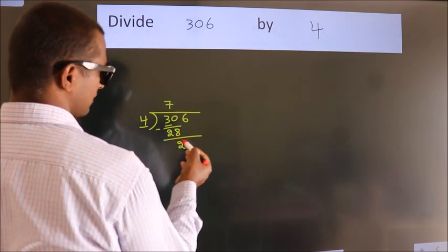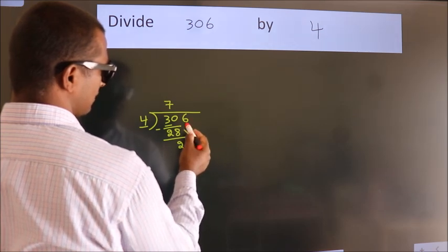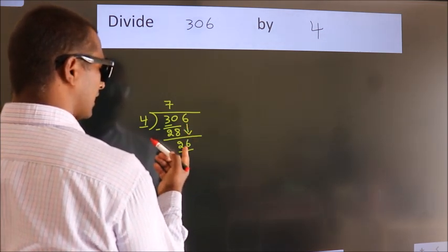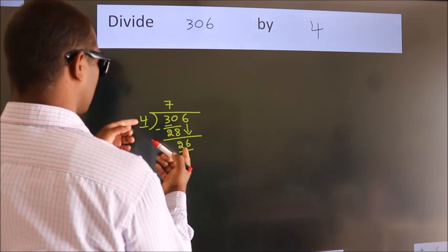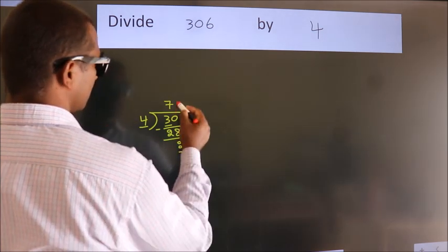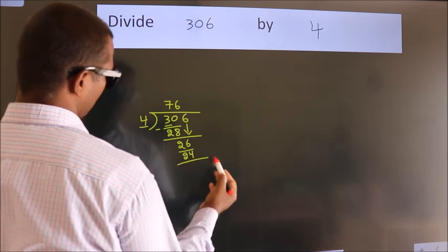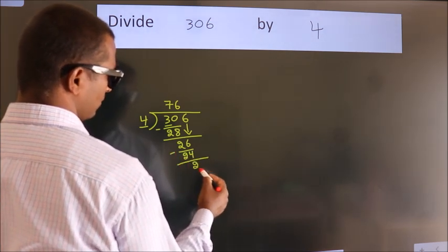After this, bring down the next number. So 6 down. So 26. A number close to 26 in 4 table is 4×6=24. Now we subtract. We get 2.